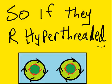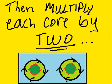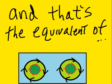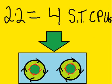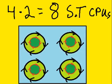You have on your PC, theoretically. So here we have two cores: two times two equals four single-threaded CPUs. Here's four cores: four times two equals eight single-threaded CPUs. Theoretically, this quad core is the theoretical equivalent of eight single-threaded CPUs.